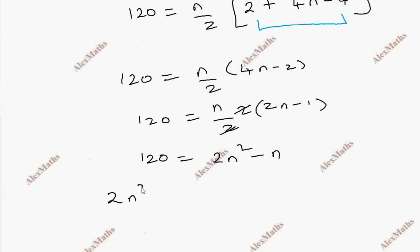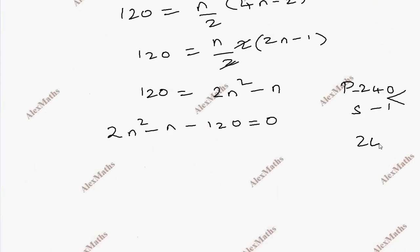So 2n square minus n minus 120 equals 0. Product is 240, sum is minus 1. Product is minus 240, sum is minus 1.